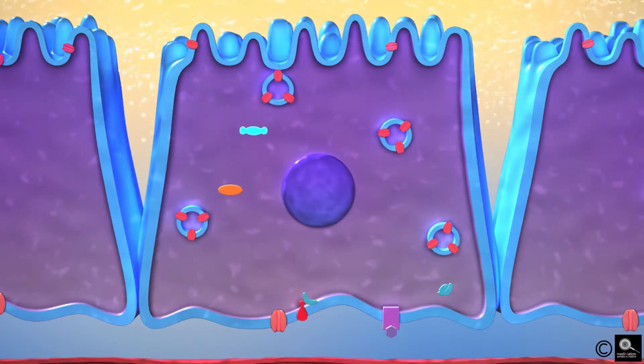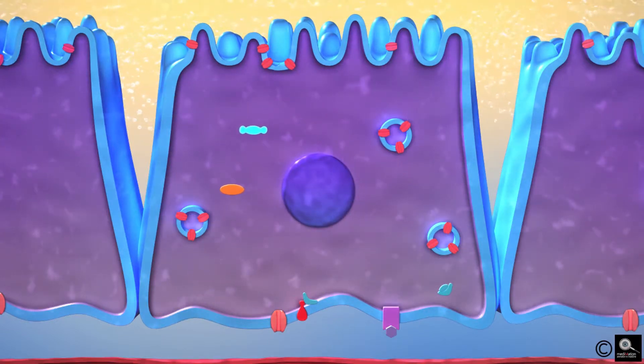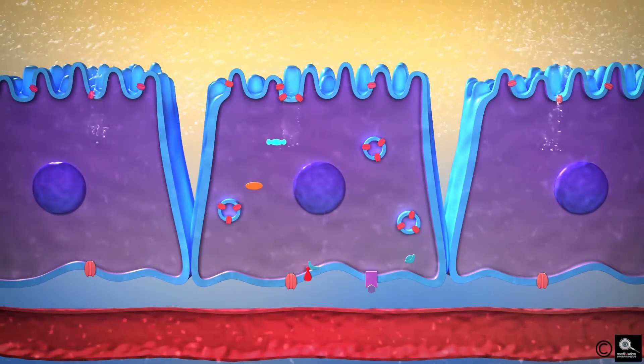The activation of protein kinases stimulates the movement of a protein called aquaporin-2 towards the luminal cell membrane. Molecules of aquaporin-2 cluster together to form water channels in the luminal membrane. The water channels allow the rapid transport of water into the cells.